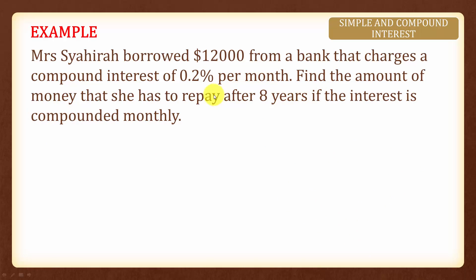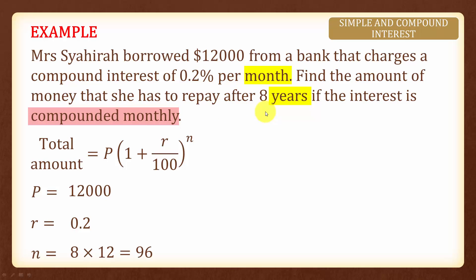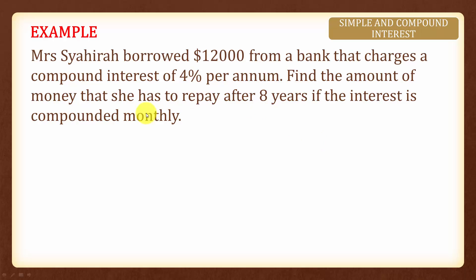In this next example, the interest is compounded monthly and the compound interest is zero point two percent per month; however, she will borrow the money for eight years. Hence we will convert years to months instead. The principal amount is twelve thousand dollars, the interest rate is zero point two percent per month. In eight years compounded monthly, we compound it eight times twelve, which is ninety-six times. Therefore the total amount will be calculated accordingly.